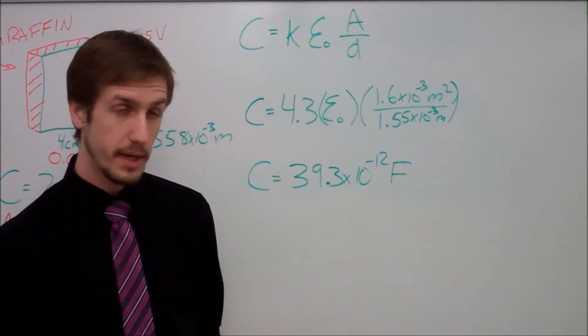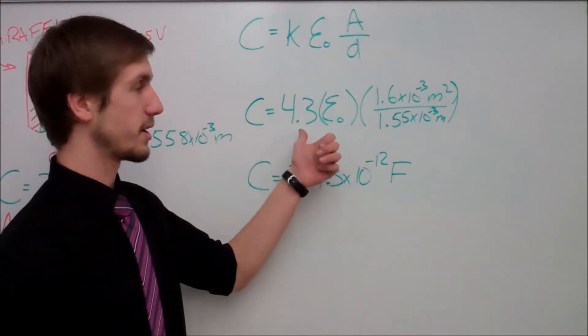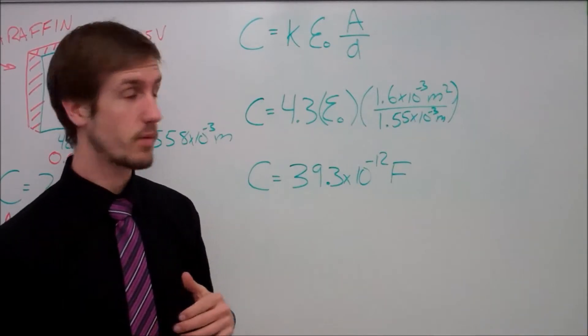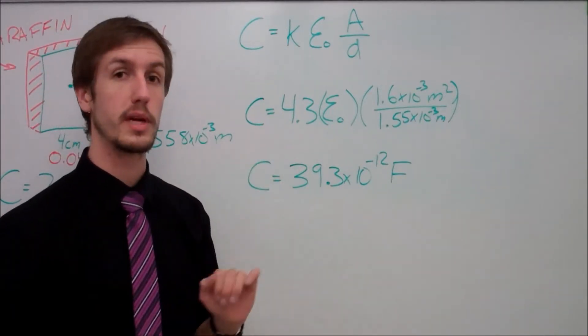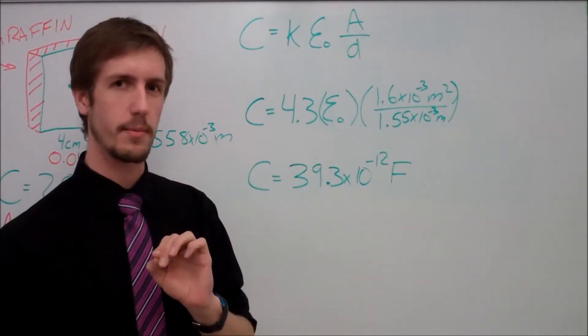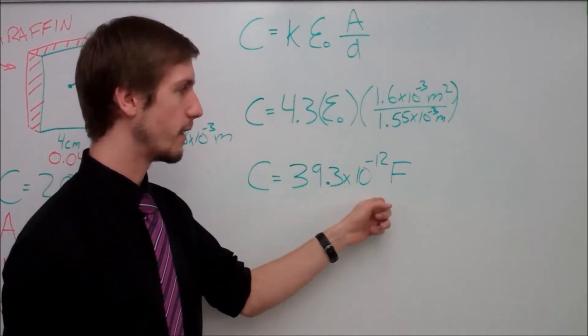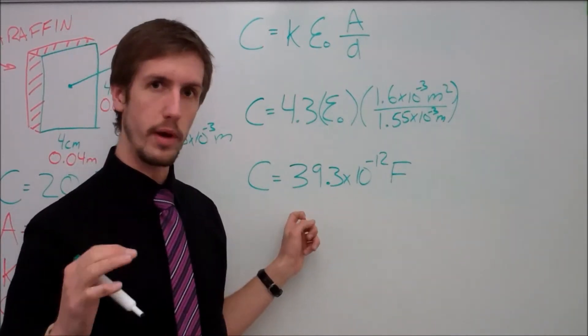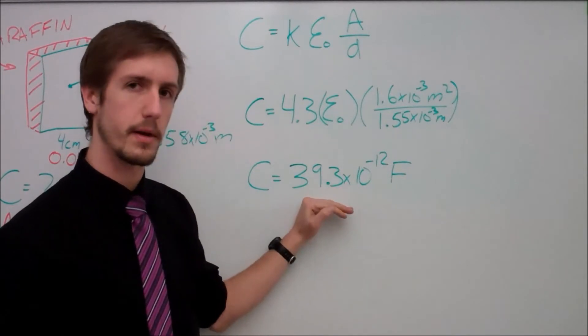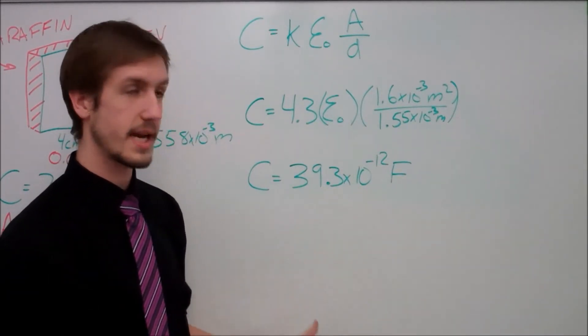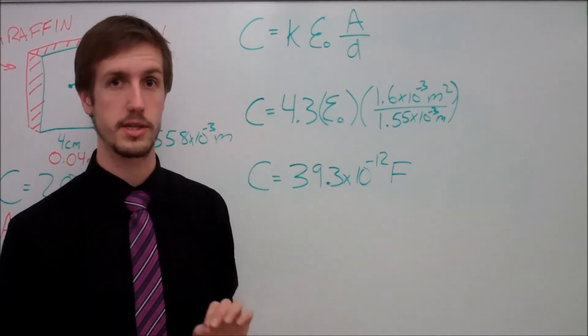So our K has now switched to 4.3. What we're going to do is we're going to switch around our capacitance and we're going to find our new capacitance. So my new capacitance is now at 39.3 times 10 to the negative 12 farads, which does make sense because the only thing that switched was my dielectric constant. My dielectric constant went from 2.2 to 4.3, nearly doubled but didn't quite double. So I should go from 20 picofarads to just under 40 picofarads, and that's exactly what happened.